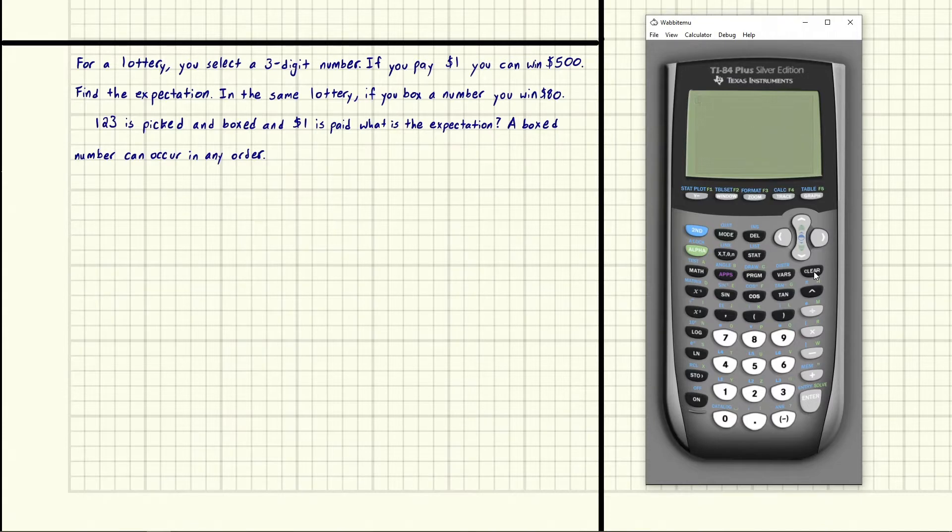123 is picked and boxed, and $1 is paid. What is the expectation? A boxed number can occur in any order.